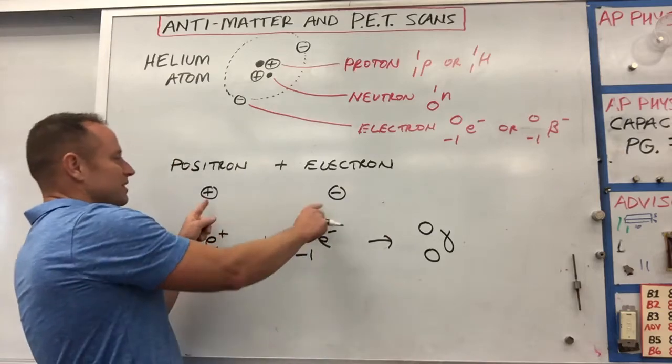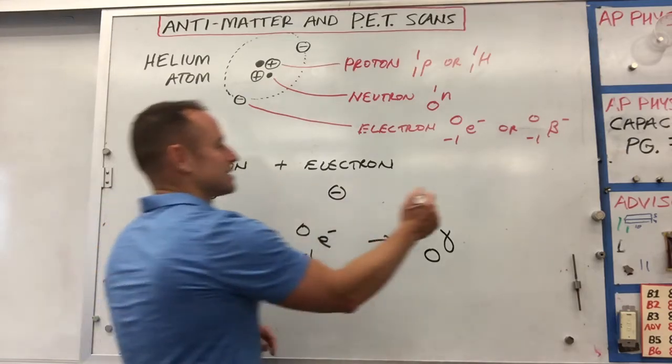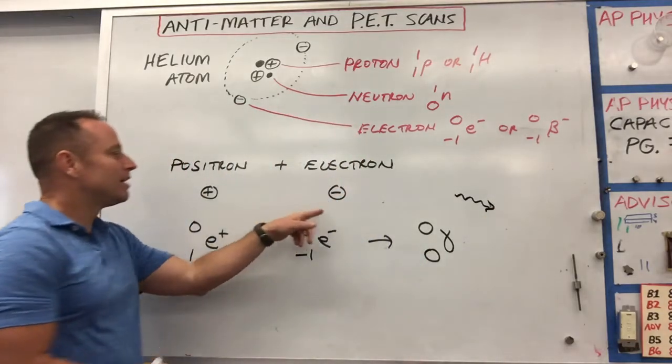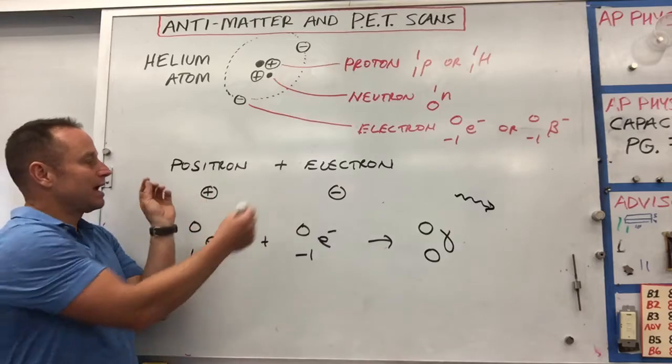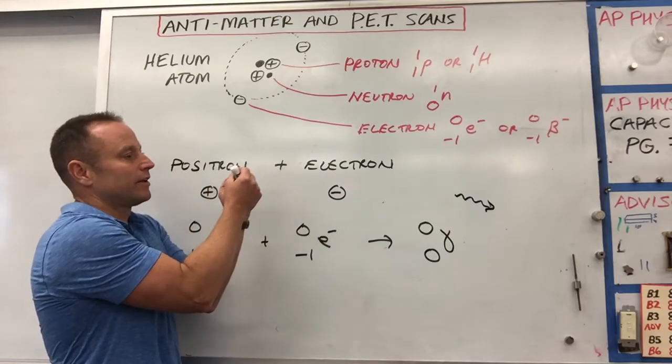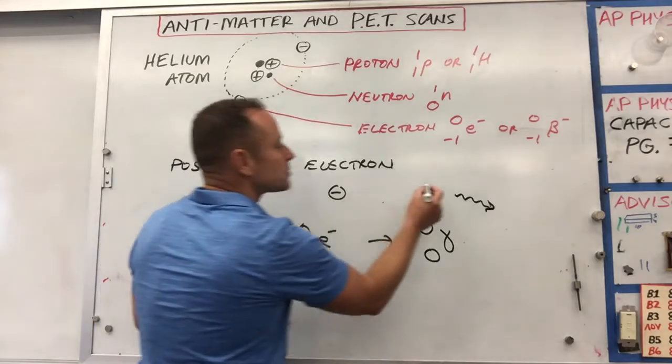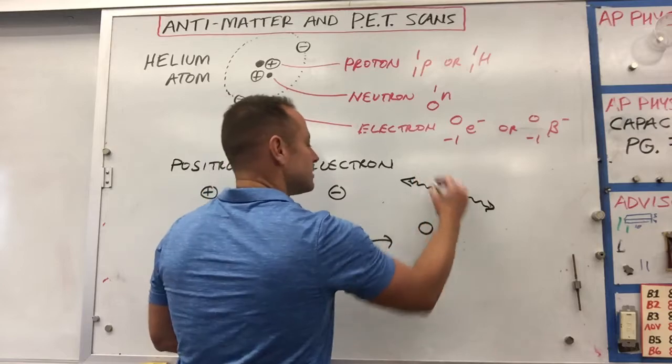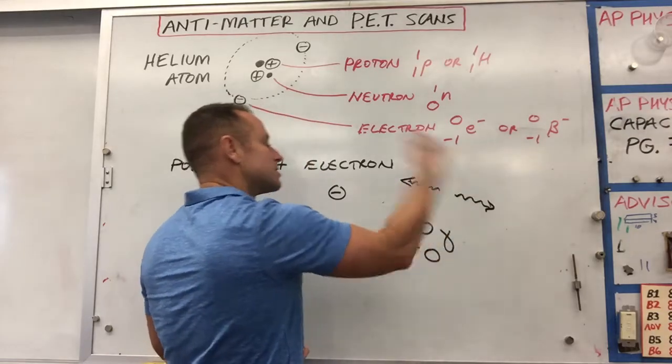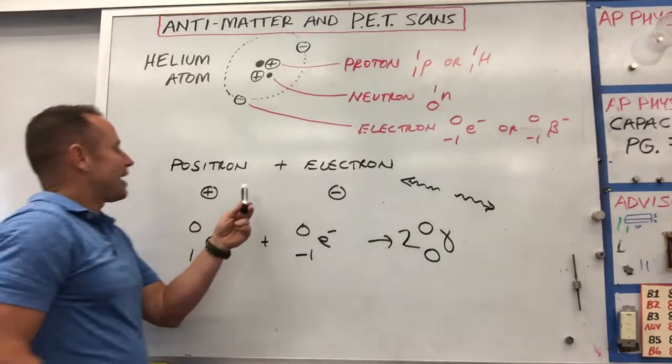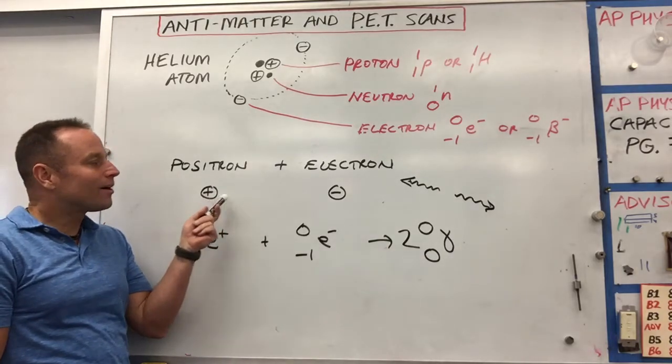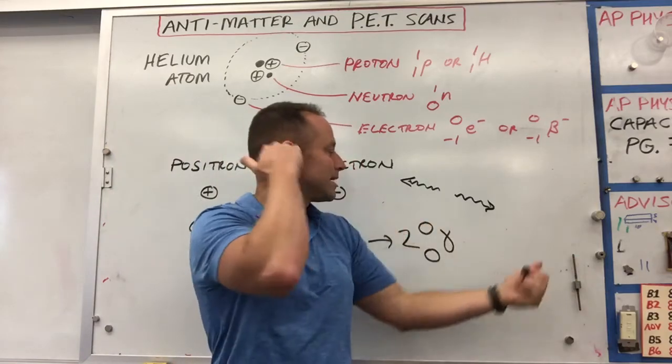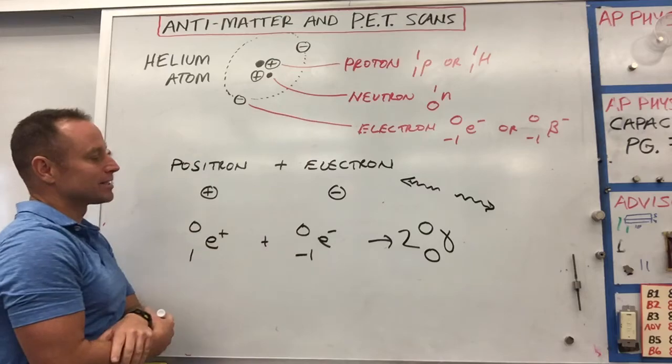Now there's a problem with this. This is saying you have a positron and electron get together and make a photon, make light. Unfortunately, this would violate momentum because you can't have two things that just kind of come together and then you just fire one thing off in one direction. So what you actually end up getting here is a pair of photons, two gamma rays. One goes in one direction, one goes the other direction. So you have a particle plus a particle. It makes no particles. You just get light. You get a pair of gamma rays that go off in opposite directions.